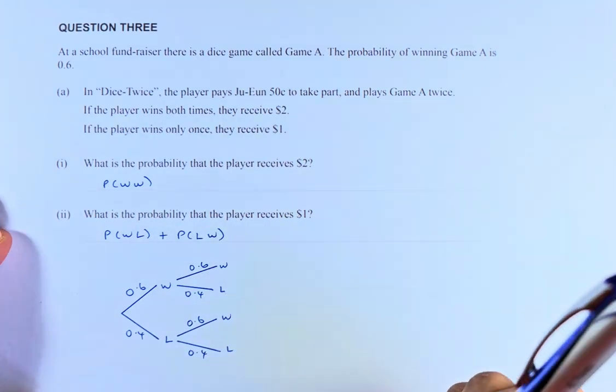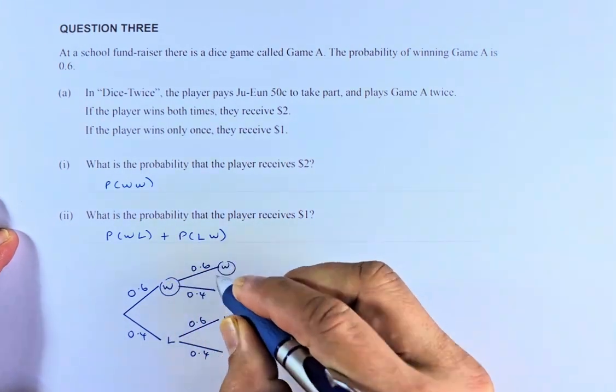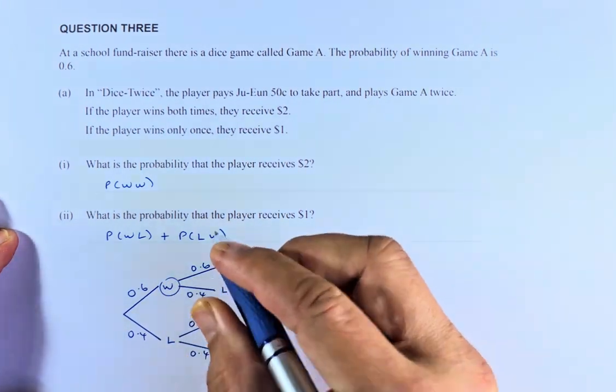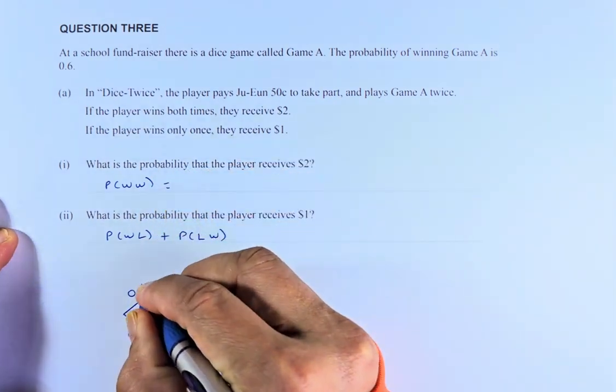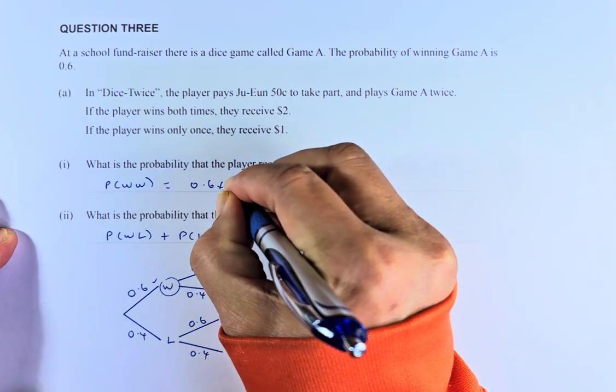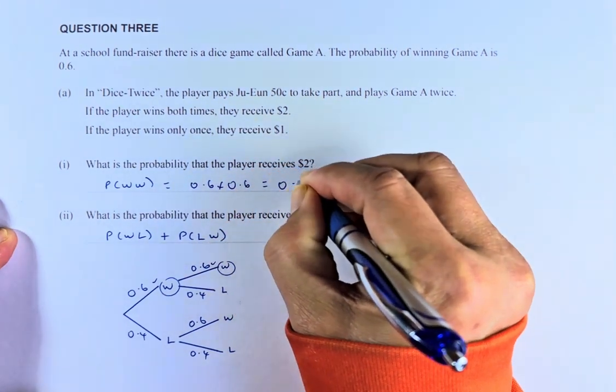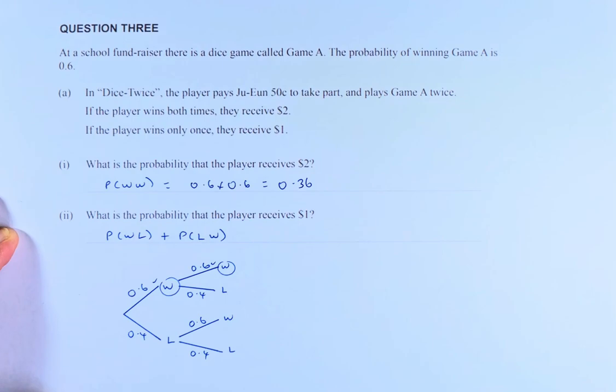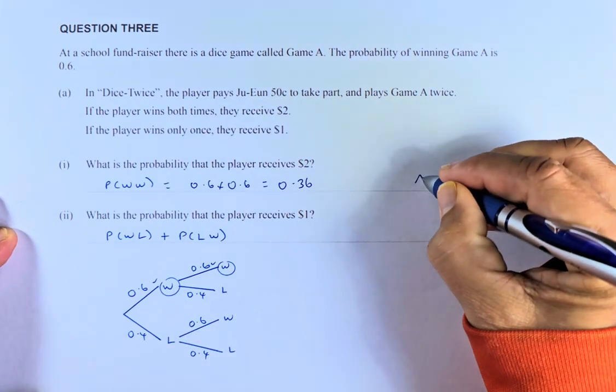So, to win $2, they have to win and win. To calculate the probability of win and win, you just take probability of 0.6 multiplied by 0.6, and the answer will come up to 0.36. If you can answer that, you get a simple Achieve for that question.